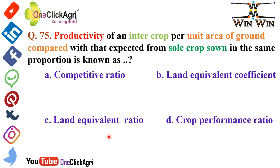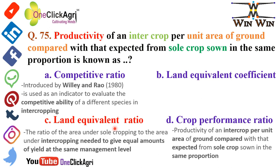Question 75: Productivity of an intercrop per unit area of ground compared with that expected from sole crop sown in the same proportion is known as the Land Equivalent Ratio (LER). LER is defined as the ratio of the area under sole cropping to the area under intercropping needed to give equal amounts of yield at the same management level.